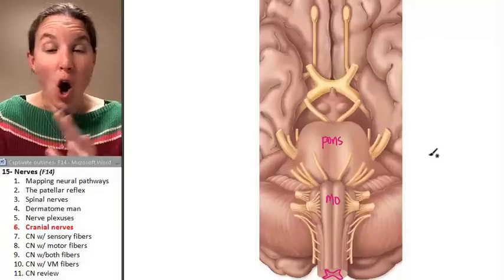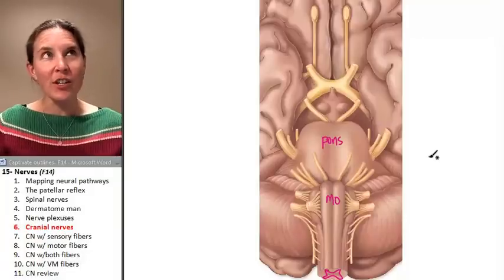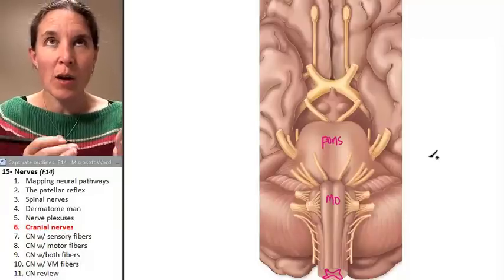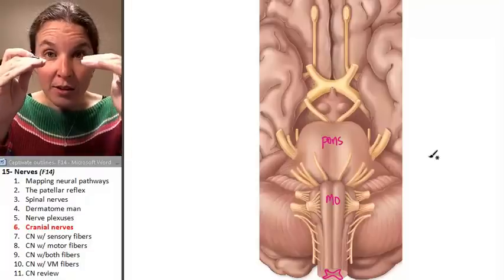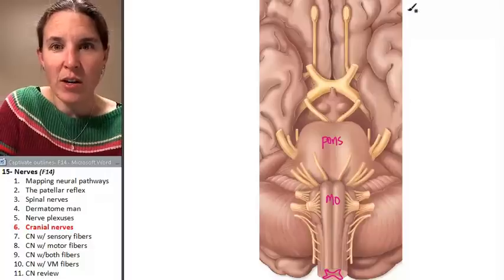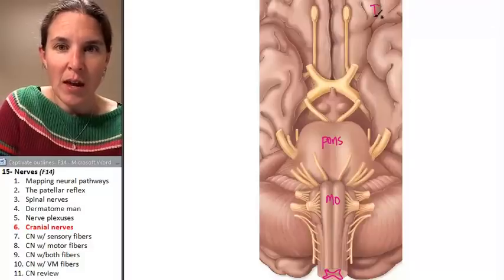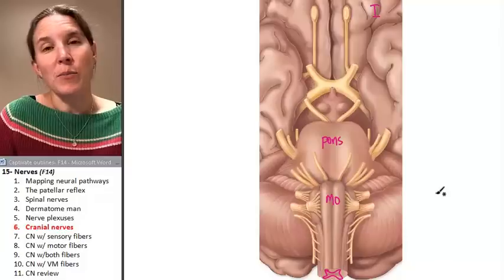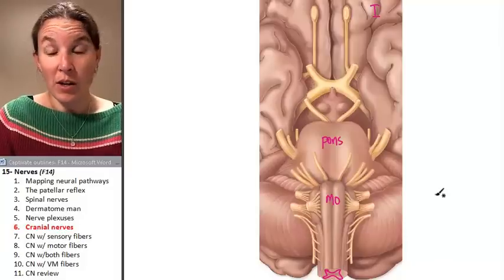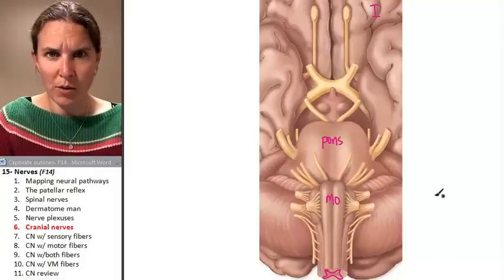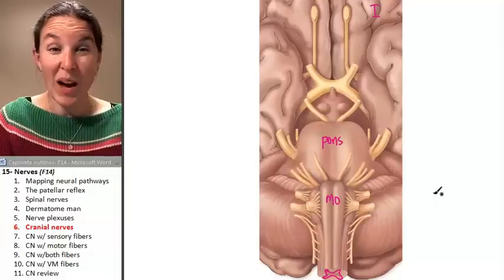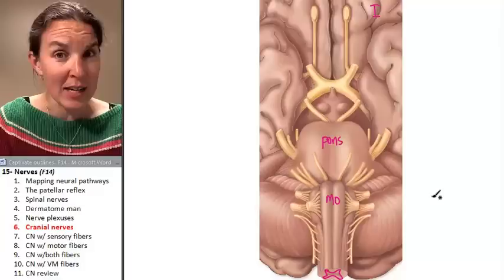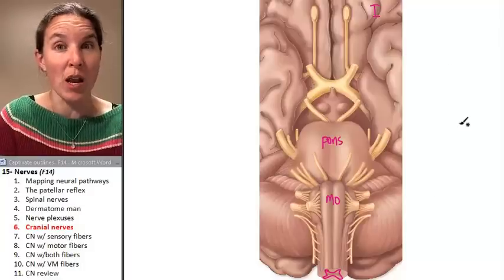Let's name all of our cranial nerves. The good news is that they are all named from anterior to posterior, and anterior is the front, right here. And that's cranial nerve number one. You have to know the number of the cranial nerve, and it's a Roman numeral number. And yes, you have to know the Roman numeral number.